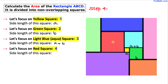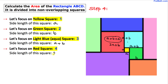Now let's focus on this red square. We know that the aqua blue side is a plus b, and this side of the yellow square is a. So the total length of this red square is going to be a plus b plus a, which makes 2a plus b. So the side length of this red square is 2a plus b.